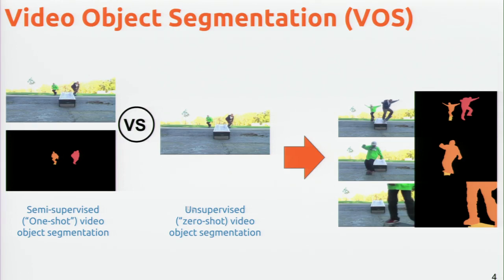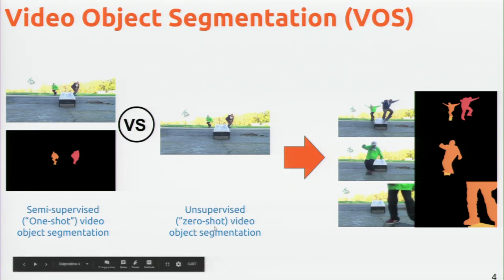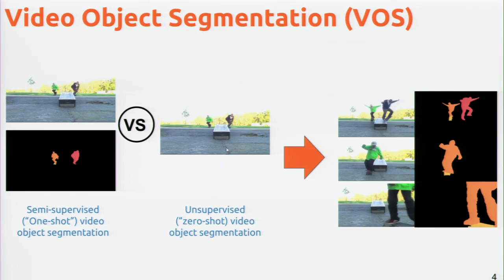There's also a task called unsupervised, or zero-shot video object segmentation, where we don't provide any mask to track — the system should be able to generate the mask by itself with no reference provided. Most of the work I'm going to talk about covers the first topic; only the last work covers the case where you have nothing at all.